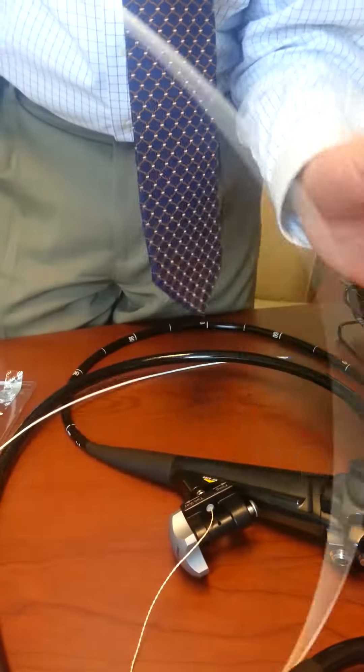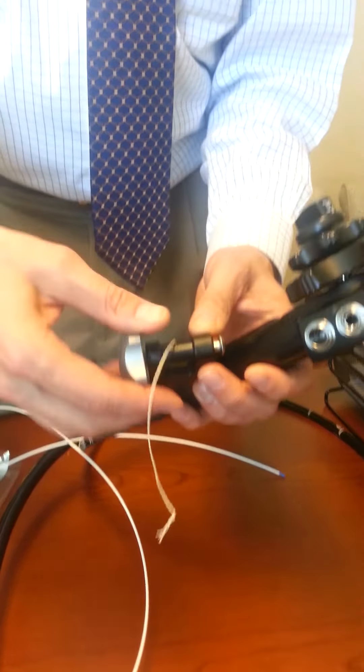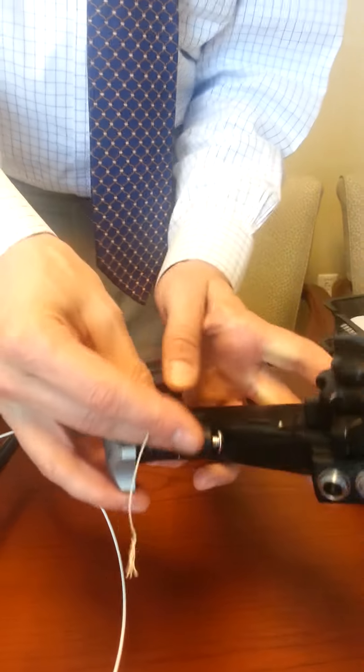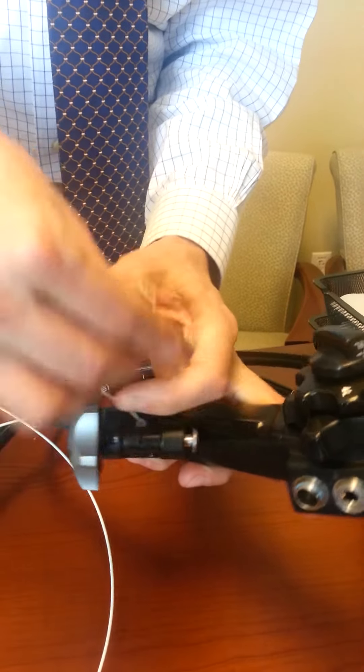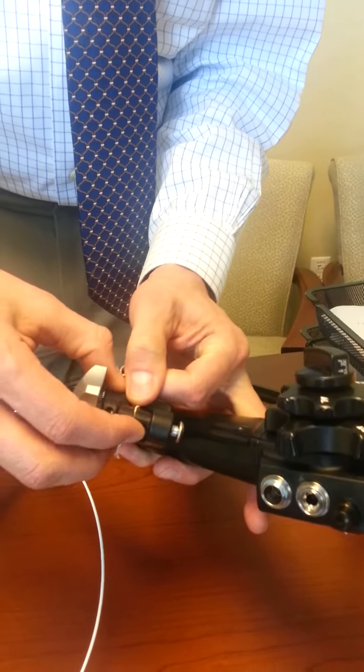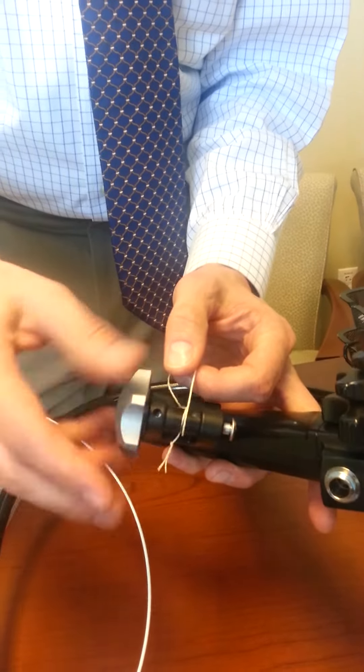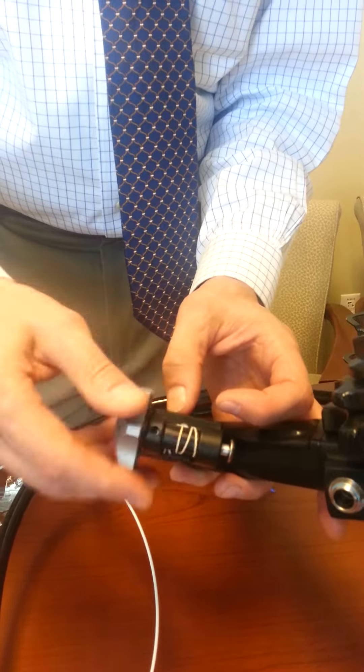The string is taken off the cannula and then hooked onto the spool. It's got a little slot in there, and then you just roll it up and you're ready to go banding.